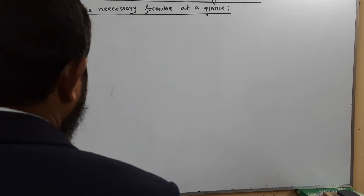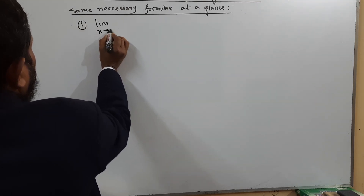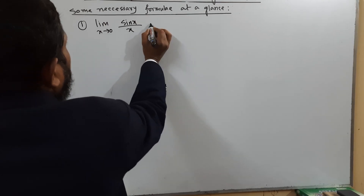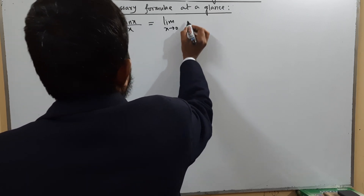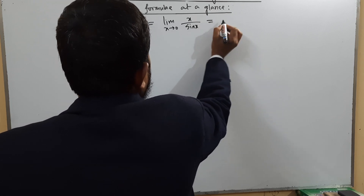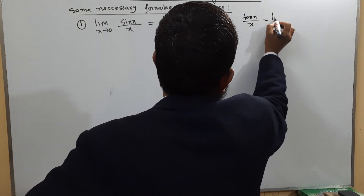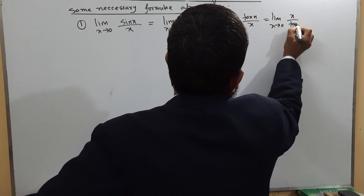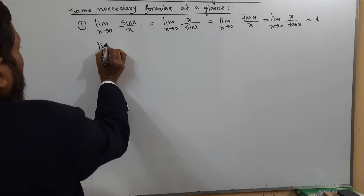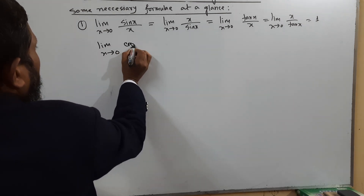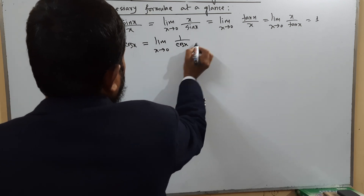The first set of formulas: limit x tends to zero of sin x / x, or limit x tends to zero of x / sin x; limit x tends to zero of tan x / x; limit x tends to zero of x / tan x — all of these are equal to 1. Also, limit x tends to zero of cos x and limit x tends to zero of 1 / cos x are equal to 1.